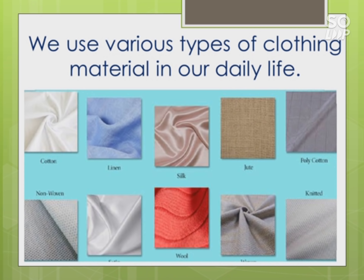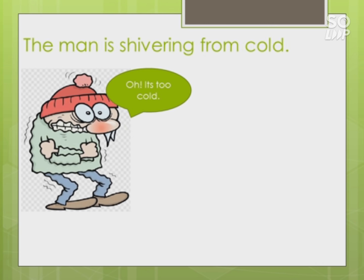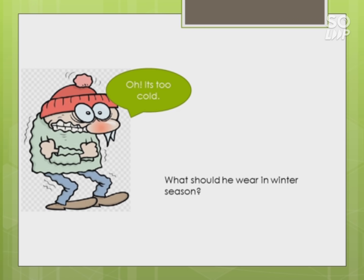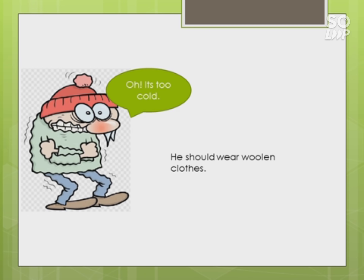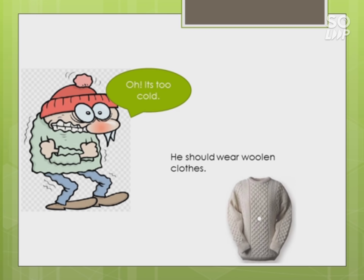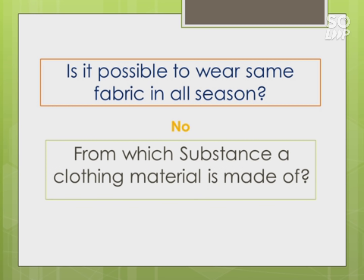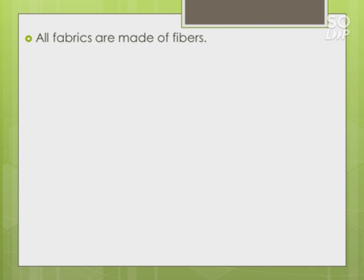We use different materials like cotton, linen, silk, jute, poly cotton, non-woven wool, etc. Some people prefer knitted clothes also. A man shivering from cold should wear woolen clothes in winter season. Is it possible to wear the same fabric in all seasons? The answer is no. All fabrics are made of fibers.